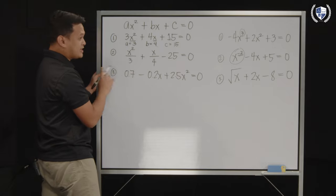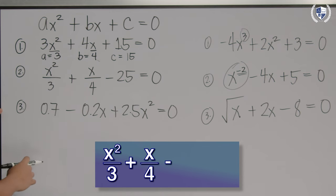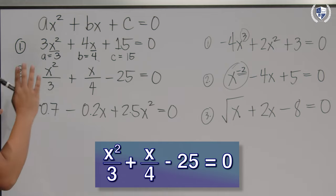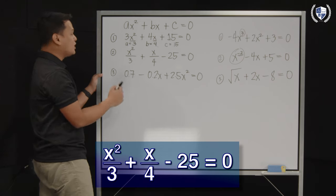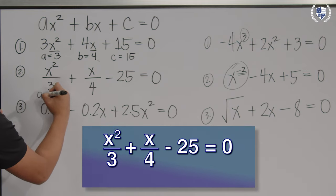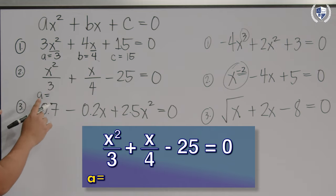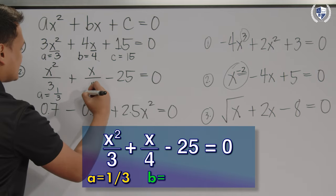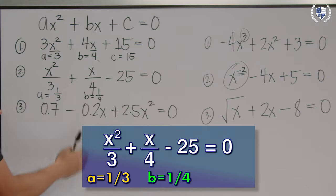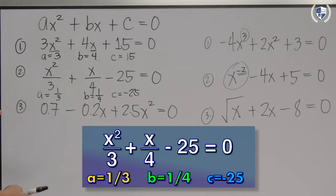Another example, our second example earlier, which is x²/3 + x/4 - 25 = 0. So, to get the values of a, b, and c, we're just looking at the numbers, or rather the coefficients, the numerical coefficients, of the terms x² and x. For your a, a is the numerical coefficient of x². And in this example, the numerical coefficient of x²/3 is positive 1/3. For your b, b is actually equal to positive 1/4. Why? Because 1/4 is the numerical coefficient of the variable x. And c is simply negative 25 because it's the lone number, or the constant term.